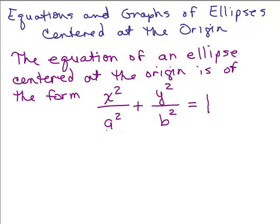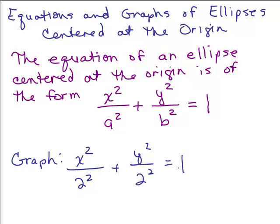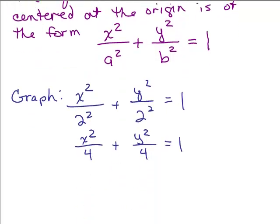Let's start off with: what if a and b were the same number? What would happen if I had written x squared over 2 squared plus y squared over 2 squared equals 1? Well, that's the same thing as x squared over 4 plus y squared over 4 equals 1. If you multiply both sides by the least common denominator of 4, you get x squared plus y squared equals 4, which is the equation of a circle.